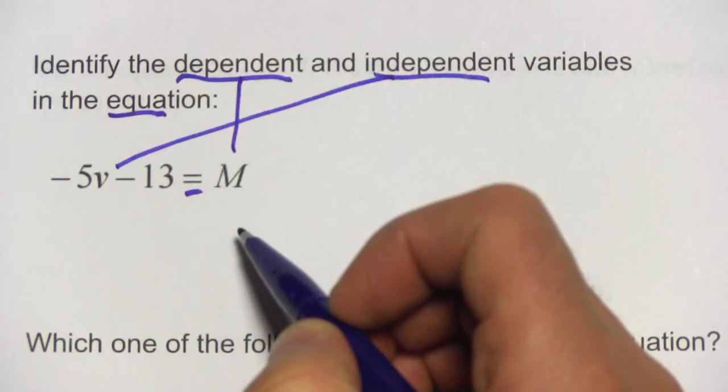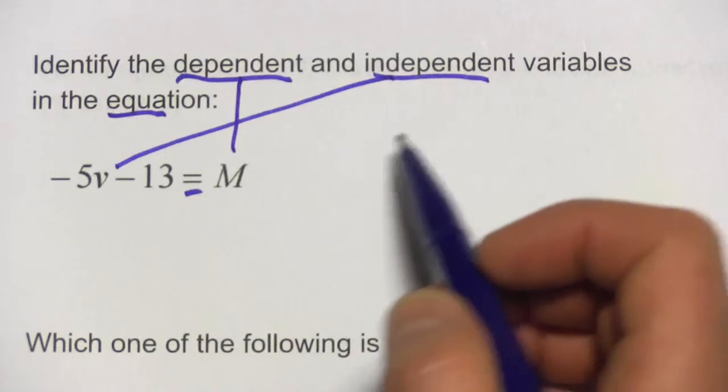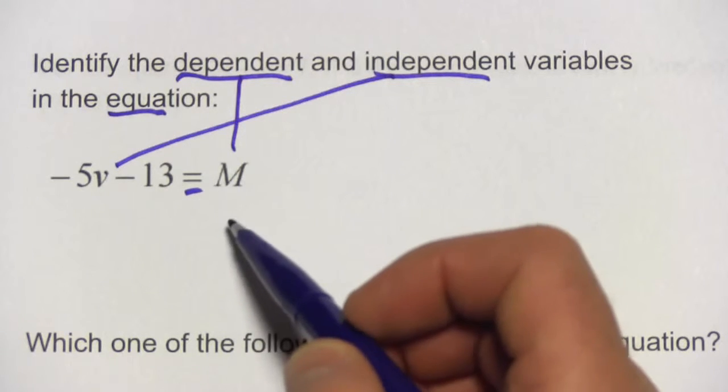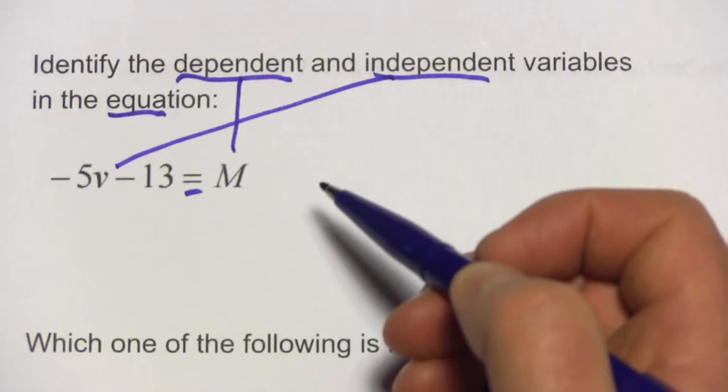So, m is the dependent variable, v is the independent. You can usually tell which one should be considered the dependent variable because it's usually all alone on one side of the equation.